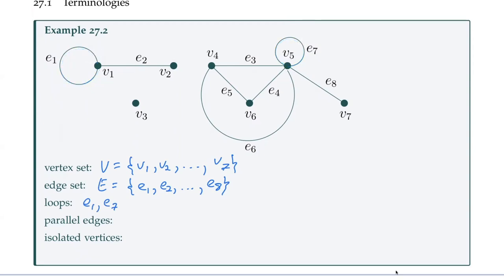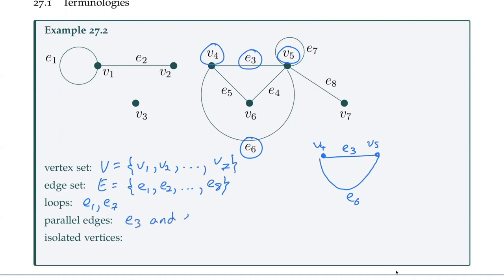What about parallel edges? We look at E3 and E6 — they both link V4 and V5. So if we think about V4 and V5, we have one edge going along, which is E3, and we have another edge going along, E6. These are parallel edges because they are linking the same vertices. So E3 and E6 are parallel edges.